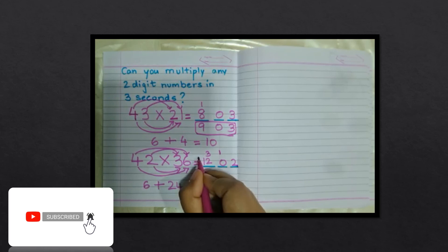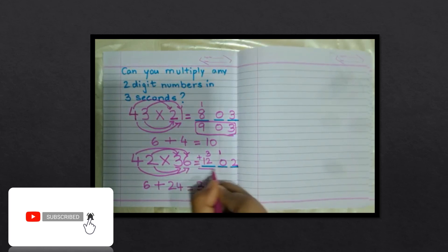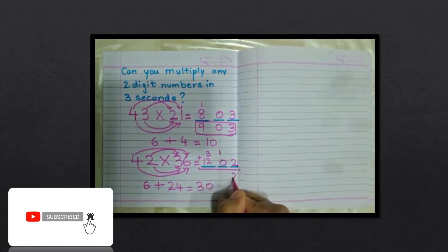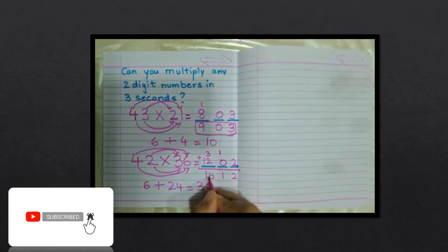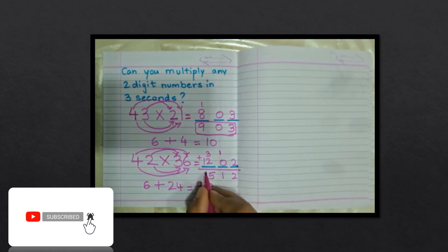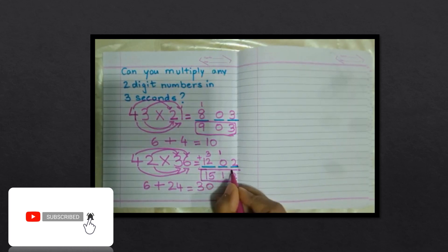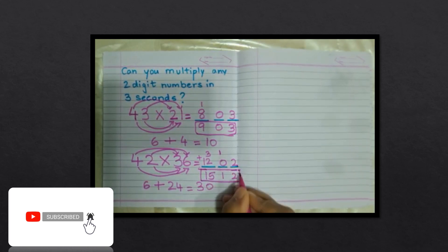Now add everything together: twelve plus three is fifteen. The final answer is 1512.